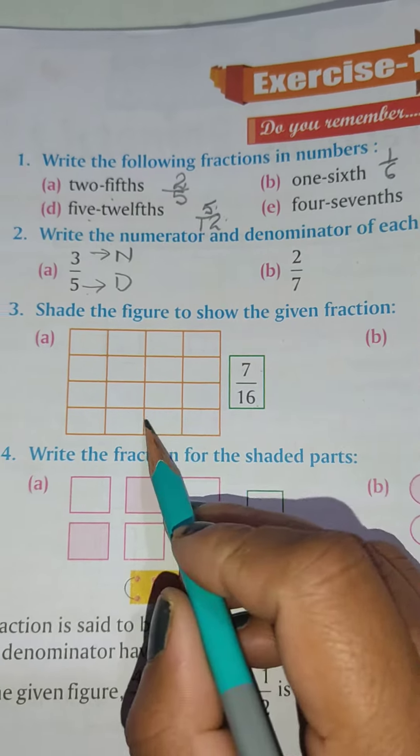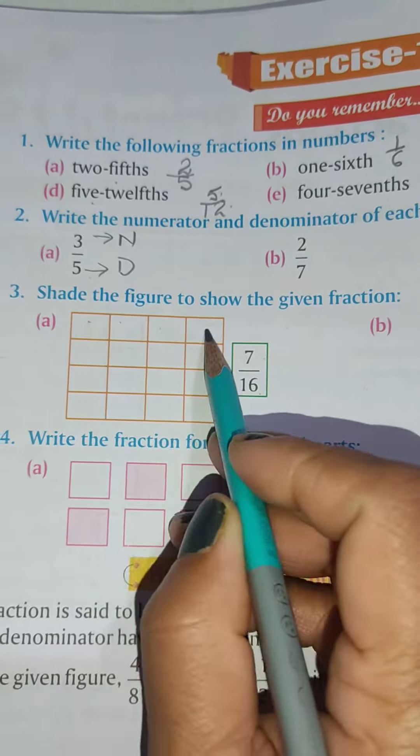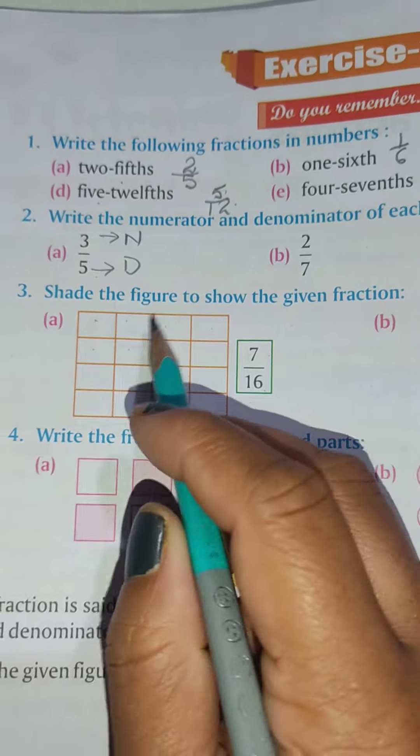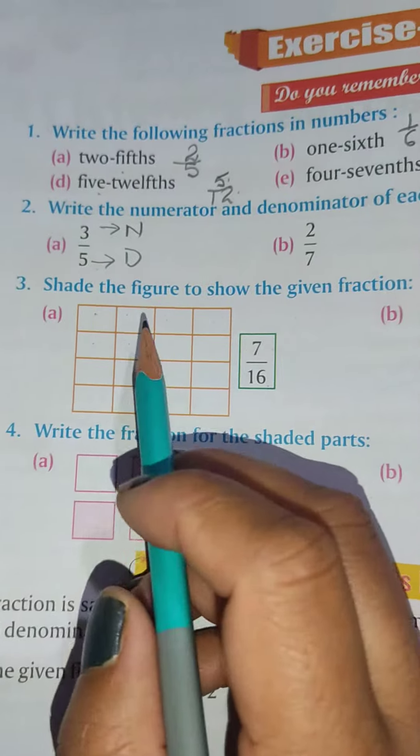Because 16 is your total parts and 7 is what is given. So 1, 2, 3, 4, 5, 6, 7. You can shade according to your convenience, whatever parts you want to shade, but total will be 7.